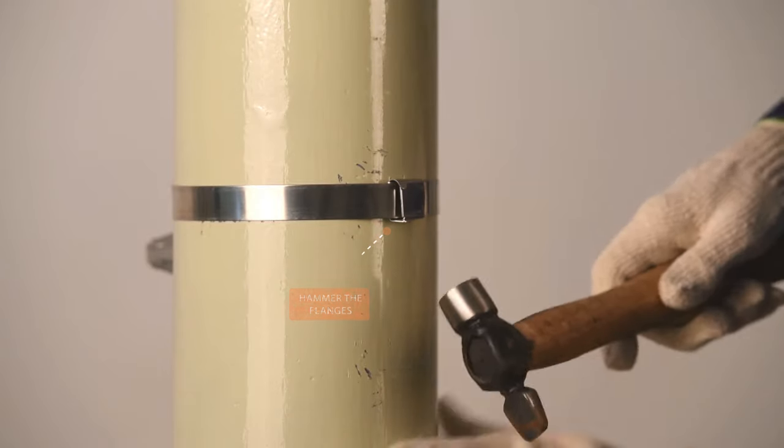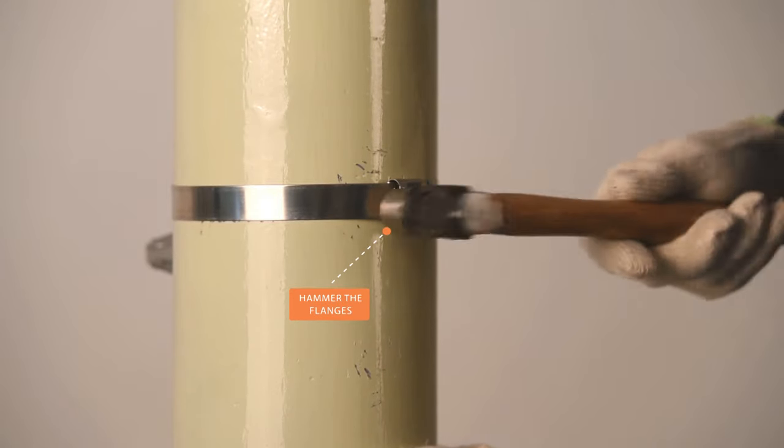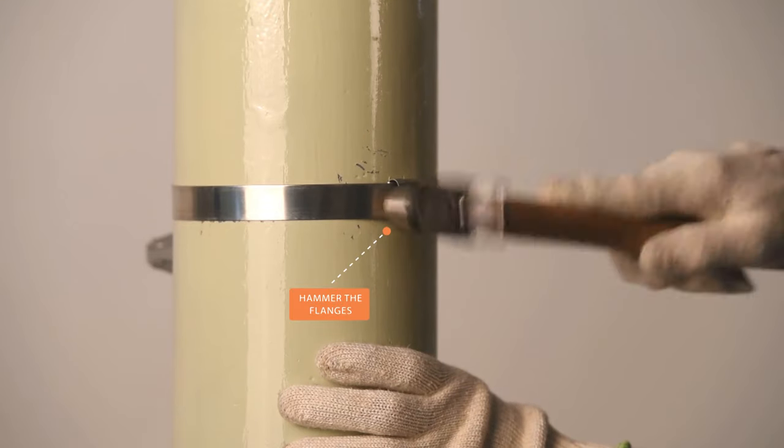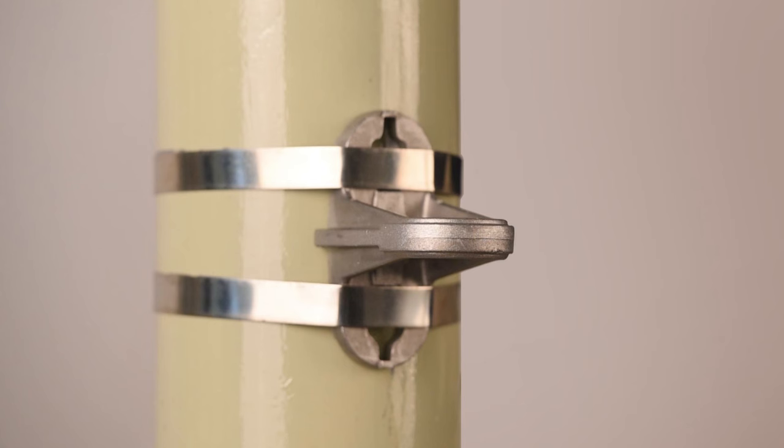Now hammer to bend the straight flanges of the buckle. Using a similar method, fix the second strap. The bracket has now been mounted.